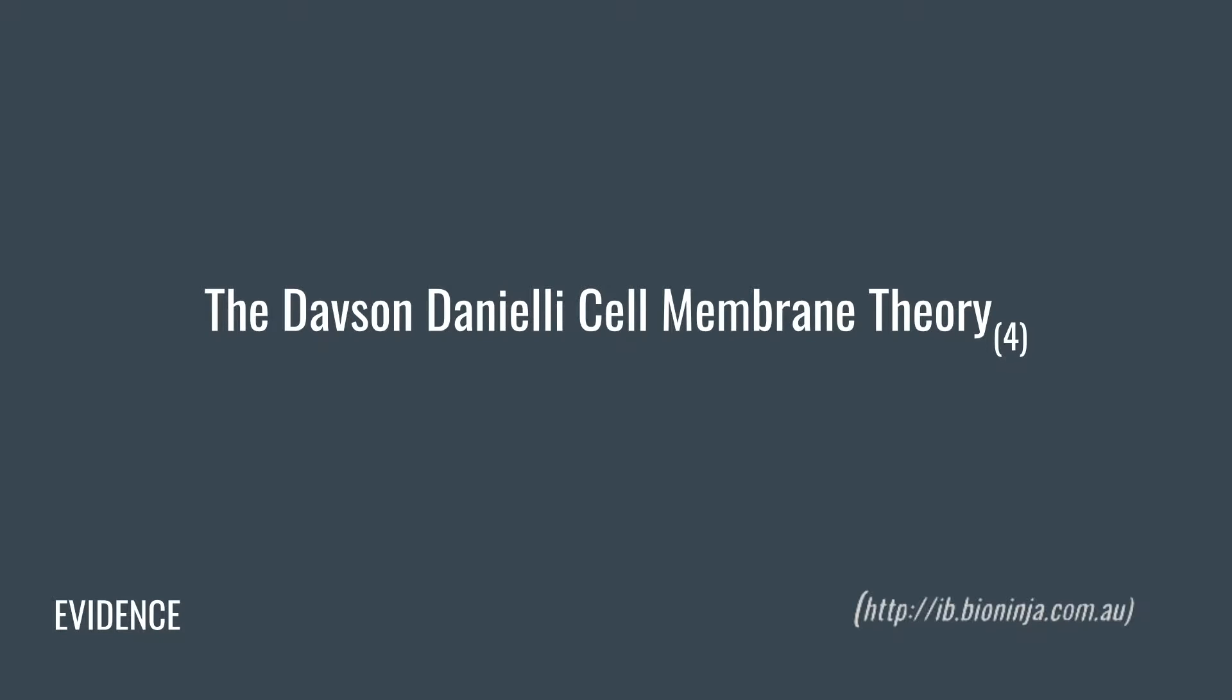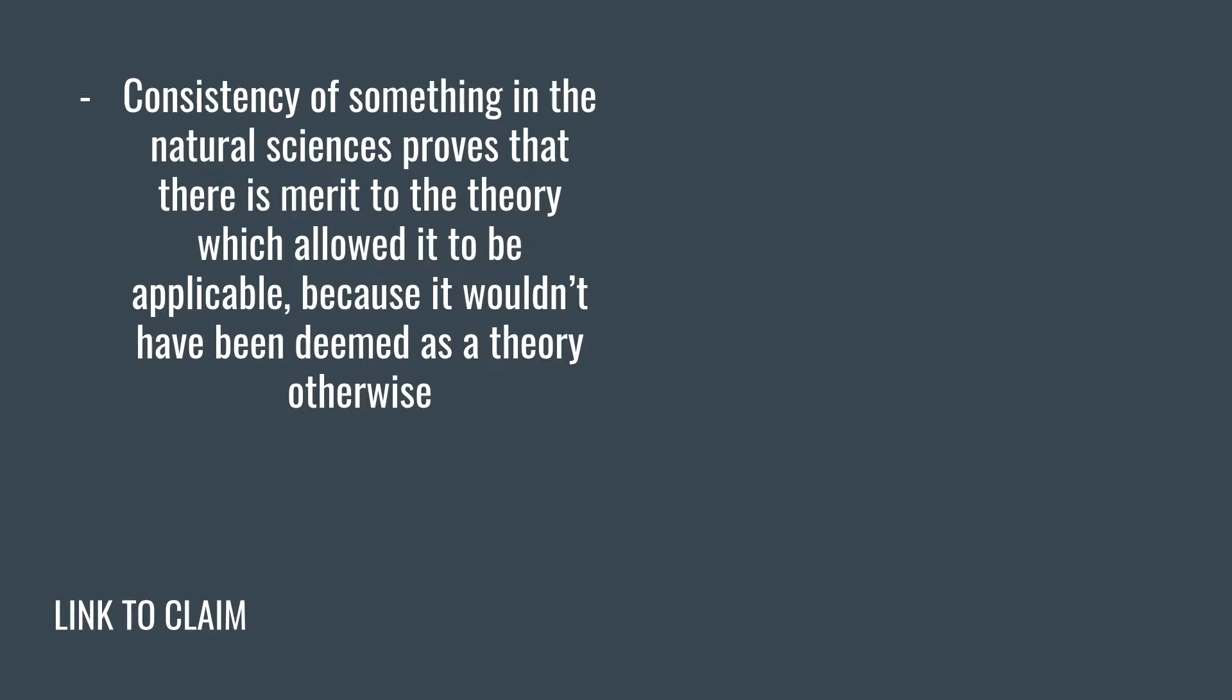This shows how even though there are empirical data disproving it, it doesn't change the fact that it was once a credible theory for a long time, proving how it should still be applicable, thus making remodeling their paradigms redundant. And ultimately, suggesting that falsifying something doesn't necessarily have to make the previous theory unreliable, it's just less reliable. So, to a certain extent, when something in the scientific field has been consistent, it implies that there is merit to the theory which allowed it to be applicable, because it wouldn't have been deemed as a theory otherwise, since everything in science needs empirical evidence. So, to some extent, especially in the science user's perspective, consistencies in science can be judged as something reliable because they tend to look at the big picture.